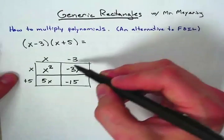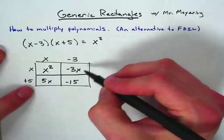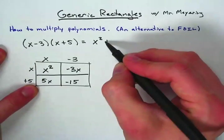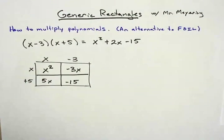As you combine all your like terms within the inside of the areas, you get just an x squared. 5x and negative 3x give you positive 2x minus 15. And that's the visual example of multiplying polynomials.